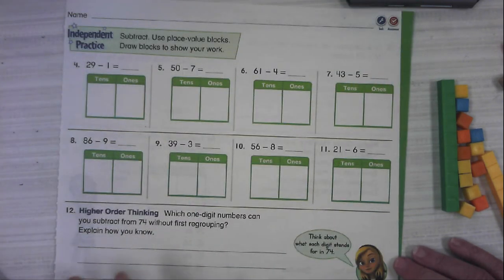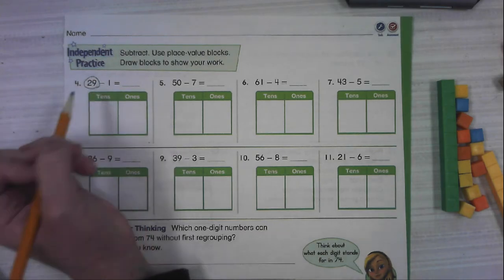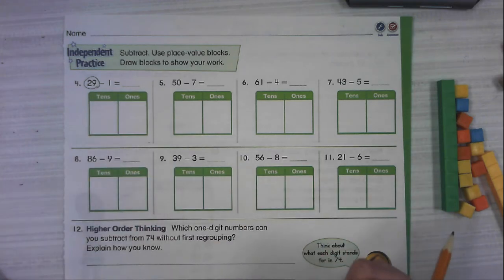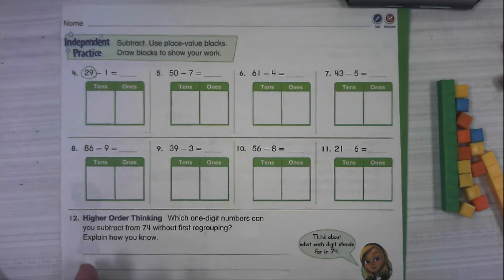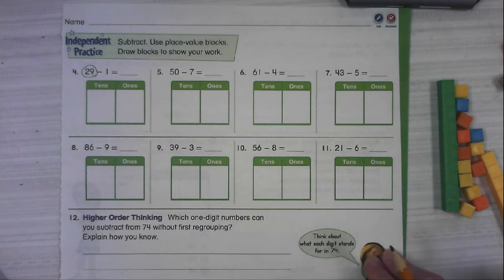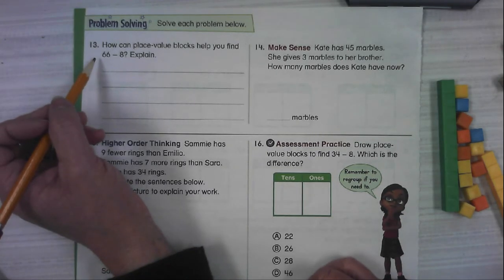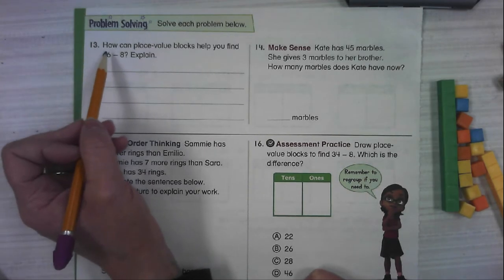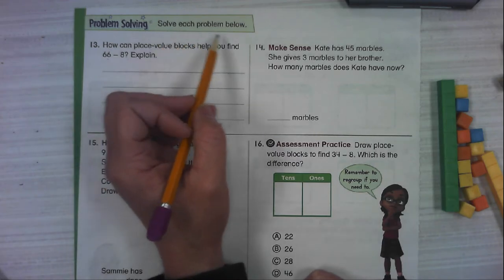Alright. Let's look at your part. You're going to do the same thing for number 4 through number 11. You're going to model the minuend, that first number, and you're going to take away whatever the second number is. That's called the subtrahend, if you want a good word to know. Number 12 says, Which one-digit numbers can you subtract from 74 without first regrouping? Explain how you know. So if we have 74, what can we take away in the ones place without having to regroup? Explain your thinking. If you'd like to pause while you finish 1 through 12 and then come back and I'll read the rest of it to you, you can do that. Or we can just breeze through it all. Number 13. How can place value blocks help you find 66 minus 8? Explain. Directions just say to solve each problem.